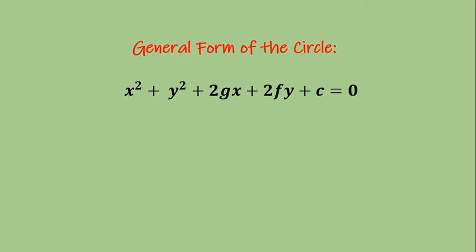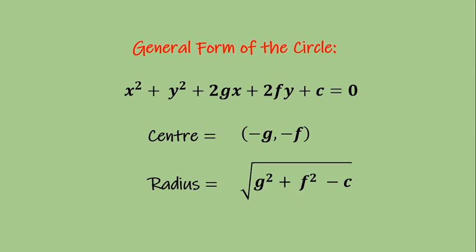The general form of the circle is x square plus y square plus 2gx plus 2fy plus c equals 0. Every equation of a circle can be expressed in this general form. You can compare the given equation of a circle with this general form, and then the center of the circle can be written as minus g comma minus f, and the radius is obtained by the formula root of g square plus f square minus c.